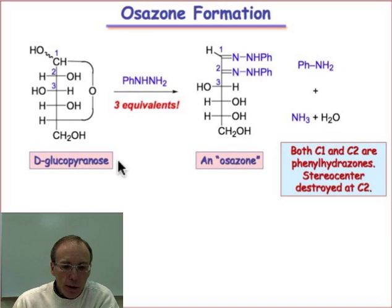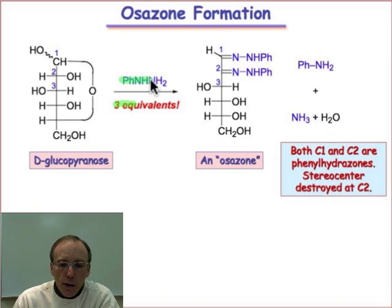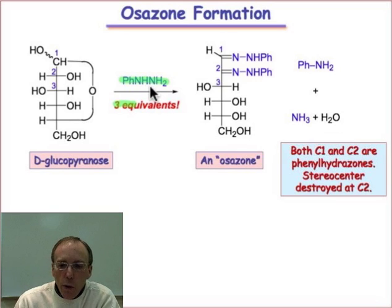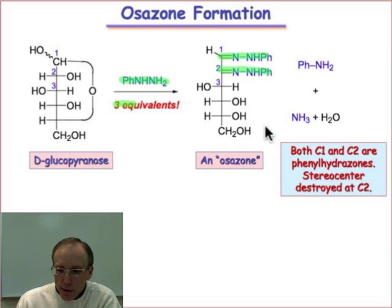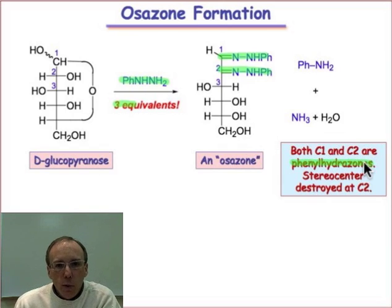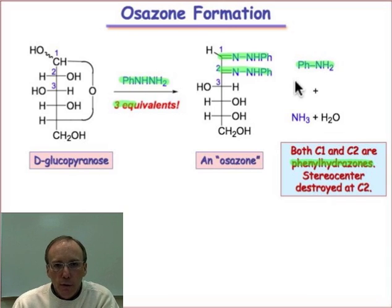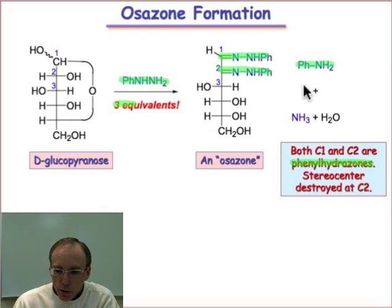Starting with D-glucose in the pyranose form, in the presence of three equivalents of phenylhydrazine — whose structure is shown here, with two nitrogens bound together — we end up making the derivative known as the osazone, shown there, which has two phenylhydrazone functionalities at C1 and C2. The third equivalent of phenylhydrazine ends up making aniline, and there is also a molecule of ammonia produced.